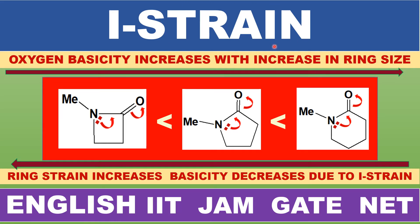There are four electronic effects: one, inductive effect — plus or minus inductive effect, plus I effect or minus I effect; two, mesomeric effect or resonance effect; three, electromeric effect; four, hyperconjugation. In this class, we will study in detail and understand hyperconjugation.